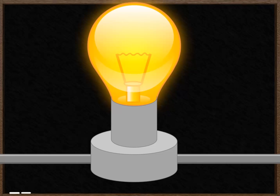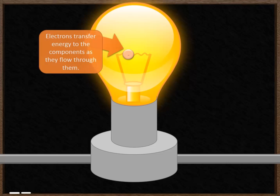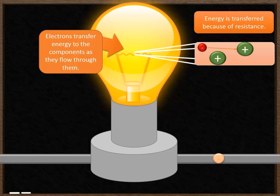If we think about a light bulb, the electrical charge comes into the light bulb, flows through the filament wire, and it transfers energy to the component, heating up the wire and causing it to glow. The reason why the electron transfers energy to the component is because of resistance — as the electron travels through the wire it collides with the metal ions, which causes it to transfer its kinetic energy to those ions, causing them to heat up.